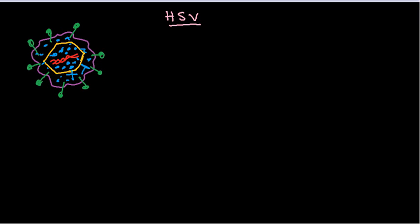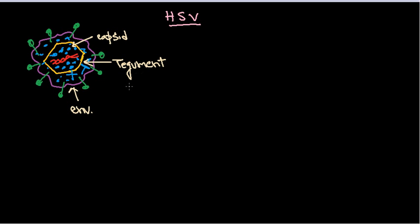So if I mark them properly: this is the envelope, this is the capsid, these are the tegument proteins, and this is the DNA — a double-stranded DNA, DSDNA. There is an important role of tegument protein during the life cycle of HSV, which we are going to see. So in a sense, HSV is a double-stranded enveloped virus.